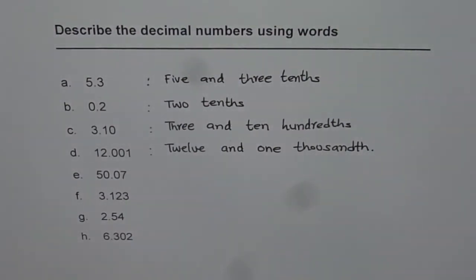Similarly, you can write the rest of them. I think the process is clear to you, which is 50 and 7 hundredths, 3 and 123 thousandths, 2 and 54 hundredths, and 6 and 302 thousandths, since this ends in thousandths position.